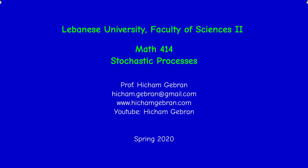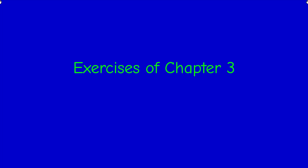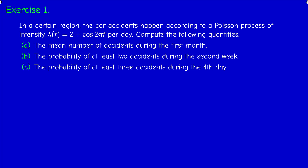Welcome back. In this video I'm going to solve the exercises of chapter 3. In the first exercise we model the number of car accidents by a non-homogeneous Poisson process with periodic intensity given by 2 plus cosine(2πt) per day. We have to compute the mean number of accidents during the first month, the probability of at least two accidents during the second week, and the probability of at least three accidents during the fourth day.